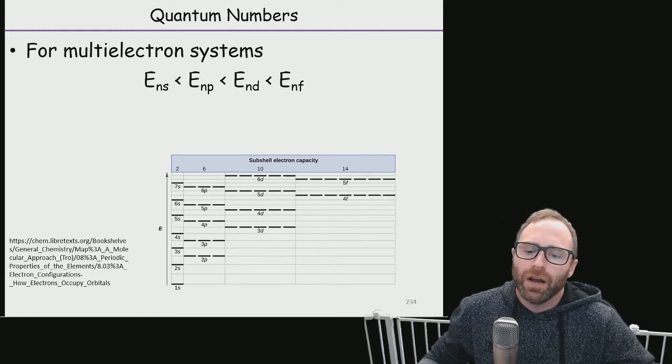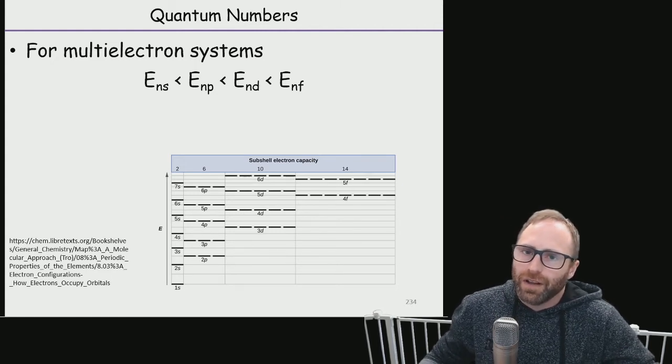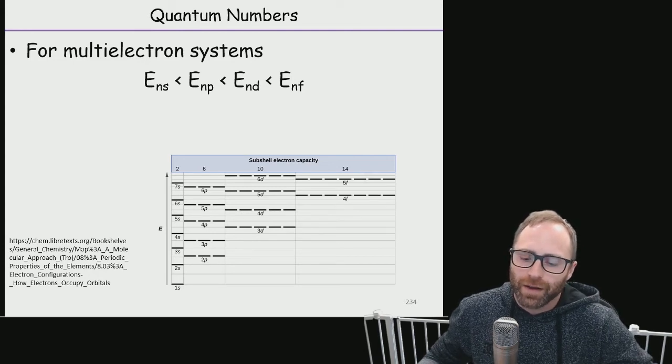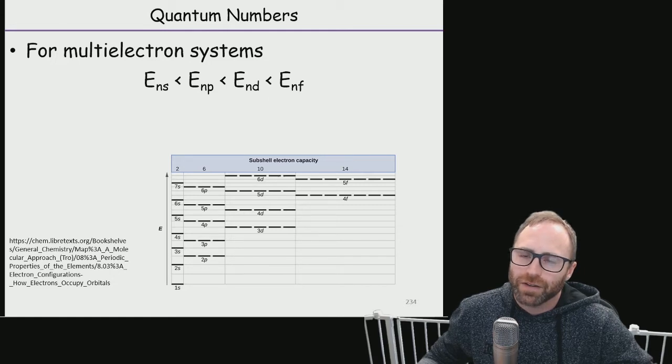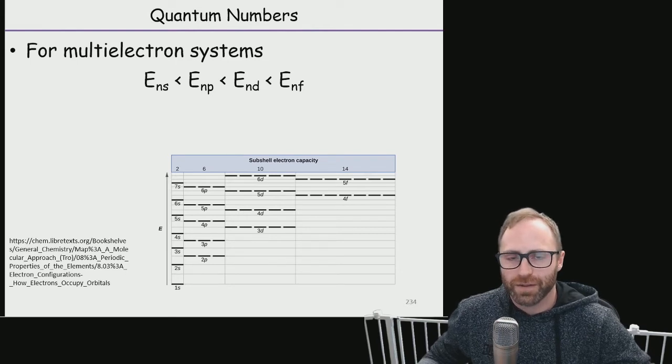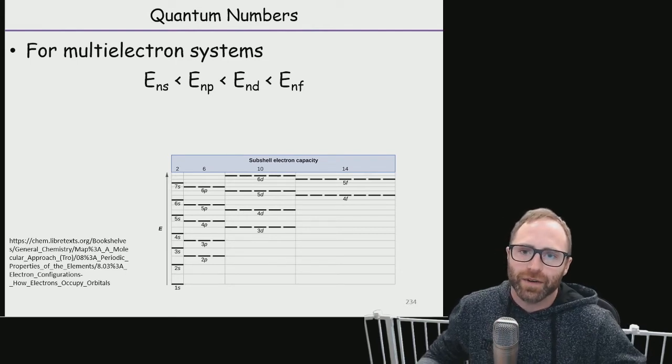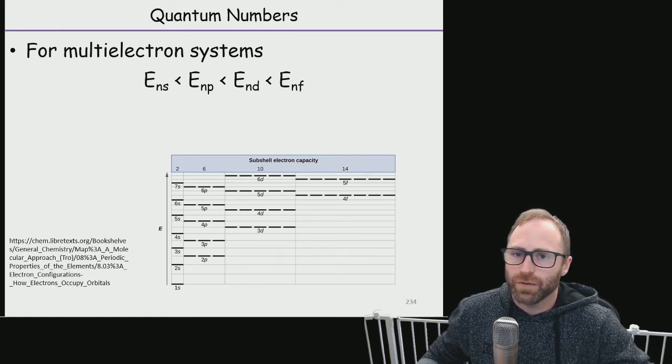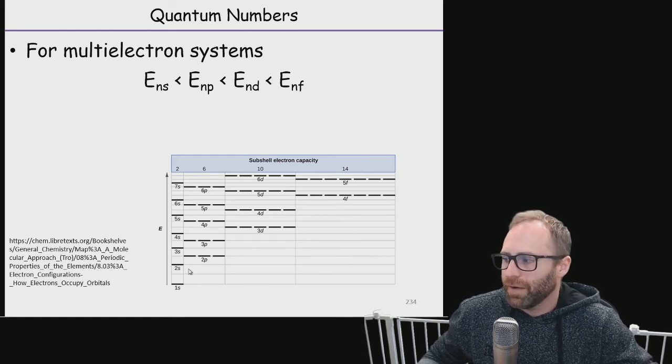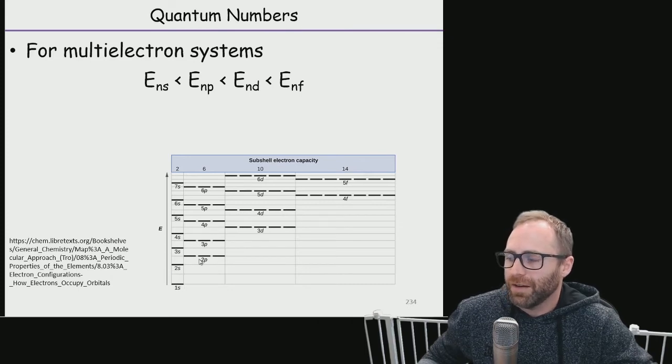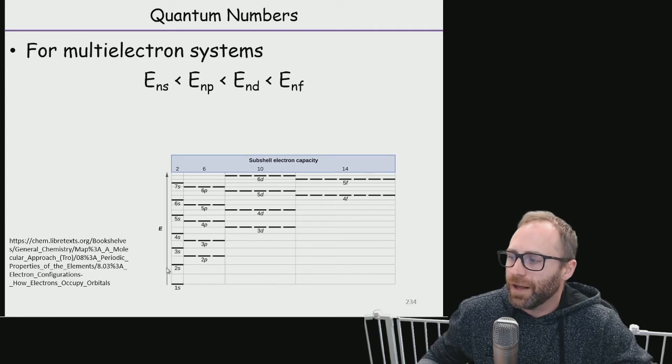This has to deal with how close the electron is to the nucleus. It has to deal with the number of electrons that we actually have in a system, and so then we have pairing energies and we have repulsion energies. There's a lot of reasons for that. But the big takeaway that I want you to know is what we've got on the screen here—that if you have a 2s and a 2p subshells, the 2s will be lower energy than the 2p.